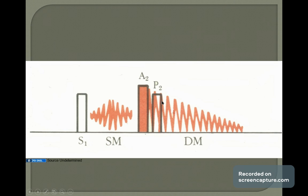This diastolic murmur may be radiated. It may be a soft murmur or more. Although diastolic murmurs are usually not radiated, this murmur can radiate if it is very severe insufficiency.